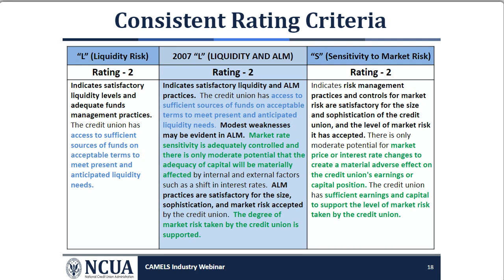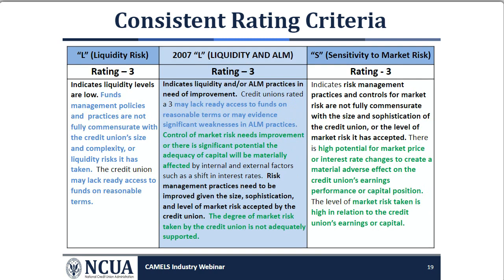An L rating of three indicates low liquidity levels; funds management practices and policies are not fully commensurate with size, complexity, or the liquidity risks taken. Credit unions rated three may lack ready access to funds on reasonable terms. An S rating of three indicates risk management practices are not fully commensurate with the size and sophistication of the credit union or the level of market risk accepted, with high potential for market price or interest rate changes to create a material adverse effect on earnings or capital, and the level of market risk taken is high in relation to earnings or capital.